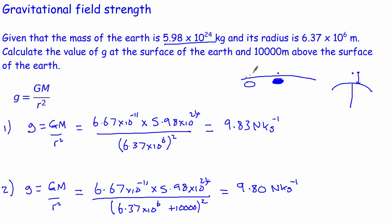So even though we've gone 10,000 metres above the surface of the Earth, the gravitational field strength has not really changed by very much. You actually have to go a fair way in order for the gravitational field strength to start to look as if it's changing by a significant amount.